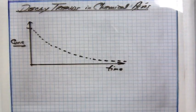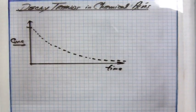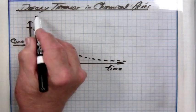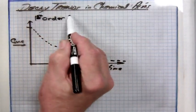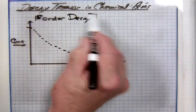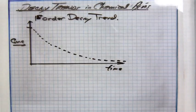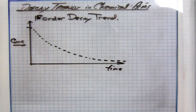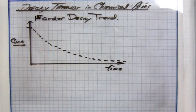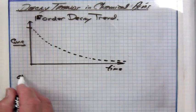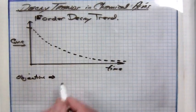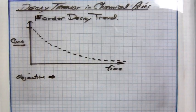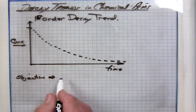This is an example of a first order decay trend. Each order has its own equation for predicting how much reactant remains as a function of time. But we're only going to work with the first order decay equation for the short term right now. The objective here is an equation that will predict the amount of substance remaining as a function of time in a chemical process.